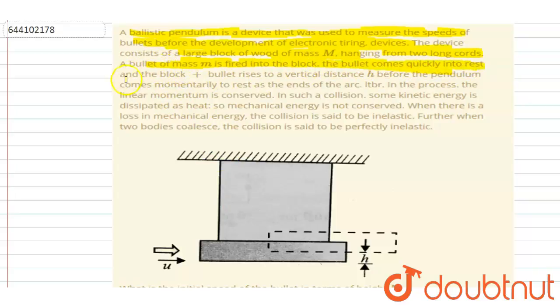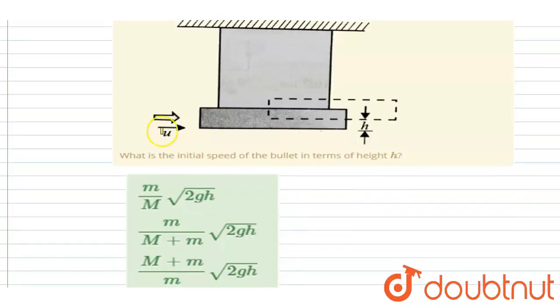quickly to rest and the bullet plus block system rises to a vertical height h. The collision is said to be perfectly inelastic - they move together. When there is loss in mechanical energy, collision is said to be inelastic. We want the initial speed in terms of h.